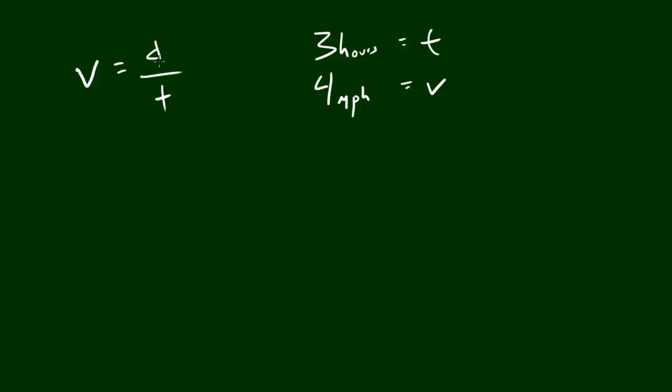Well the first thing we need to do is we need to get distance on its own side of the equation. So how do we get distance alone? Well we times this by t. So those cancel out and we end up with this. Distance equals velocity times time.